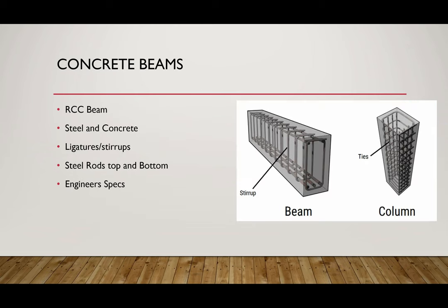Now for an overview of what we'll be doing in drafting — we've got concrete beams and columns. These are made of a composite material, meaning two types of material acting together: steel and concrete. The ligatures are the little circular elements on the outside, and the steel rods or bars are the long ones. These are used in concrete construction and are designed by an engineer. We won't be designing them, but I will go through some concrete concepts to give you a good foundation for the next two years.